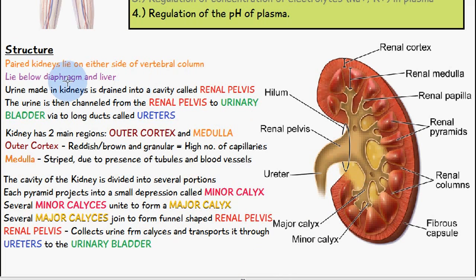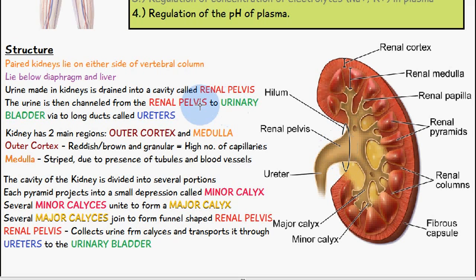The paired kidneys lie on either side of the vertebral column, below the diaphragm and liver. Urine made in the kidneys drains into a cavity called the renal pelvis, and is then channeled from the renal pelvis to the urinary bladder via two long ducts called ureters.